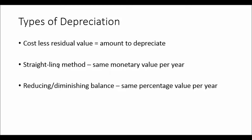There are two main types of depreciation — there are other methods, but these are the two main ones. First, straight-line method: the depreciation is the same monetary value per year. Second, reducing or diminishing balance: the depreciation is the same percentage per year. You may think these are the same thing, but as we look at examples you'll find out they're not.